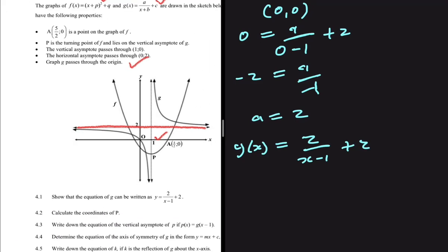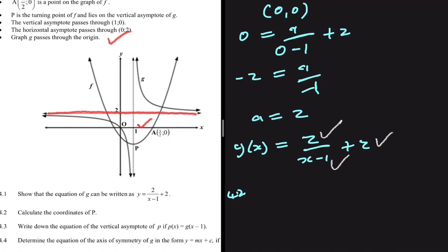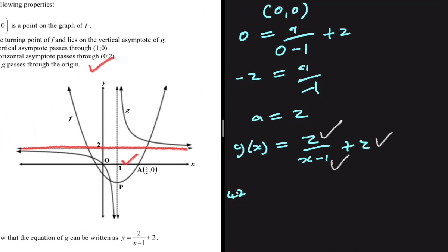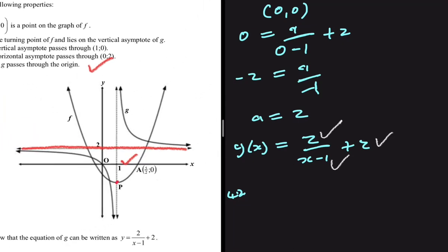We have the values of a, b, and c. Let's move to 4.2. The question in 4.2 asks us to calculate the coordinates of P, which is the turning point of f of x. We're given the x value at P because the vertical asymptote passes through P, which tells us that the x coordinate at the turning point equals 1.